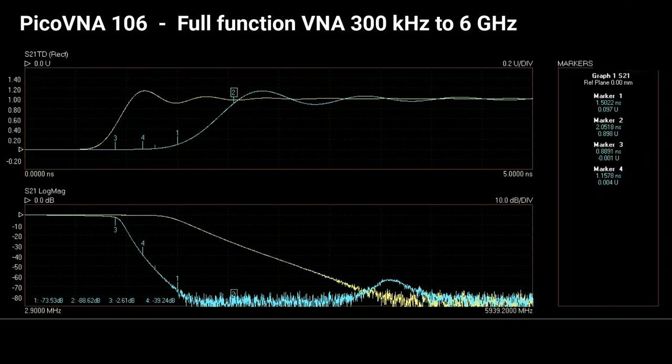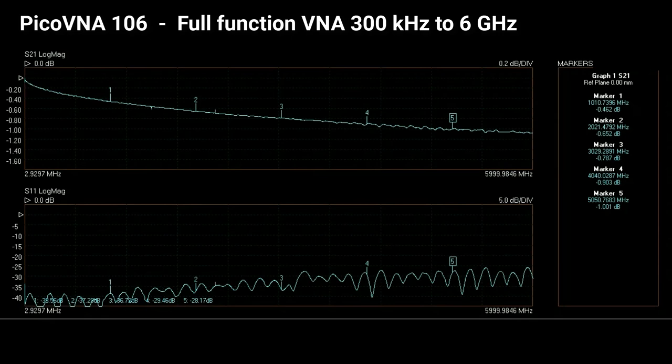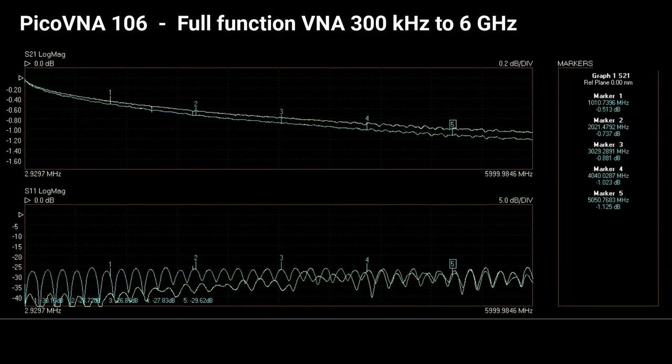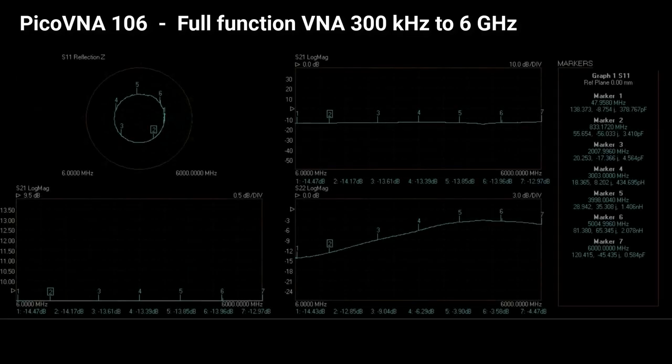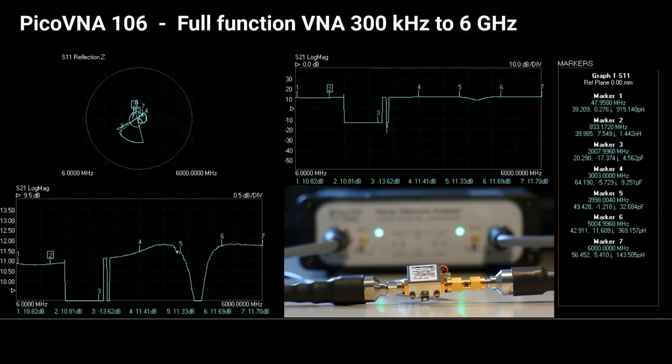We need to think too about the trace noise and speed. Supported by trace noise of 0.05 dB RMS. Here I compare two short lengths of coax cable and their readings are coming in at 5000 full S2P points per second.